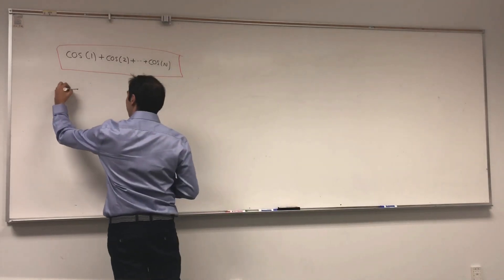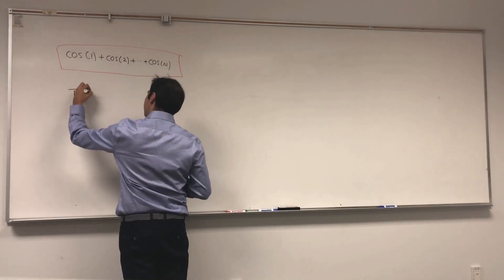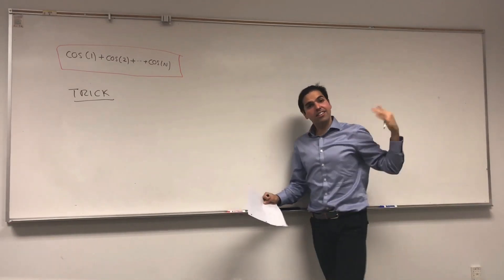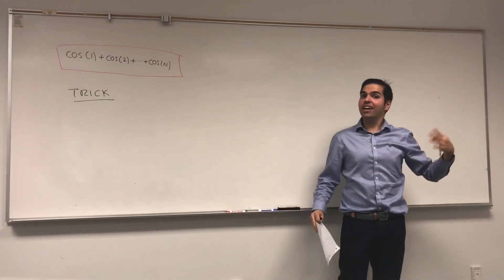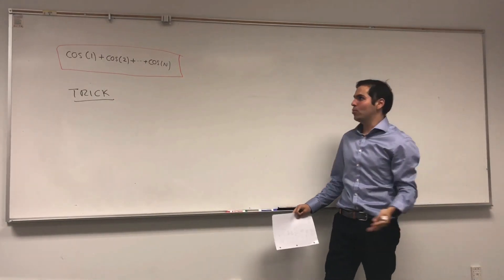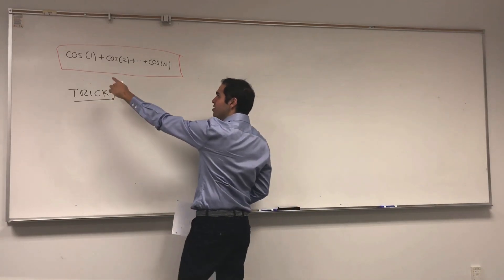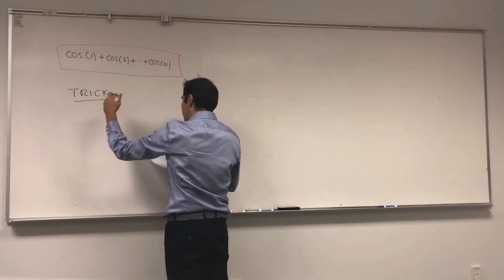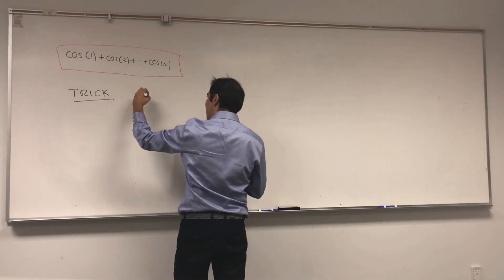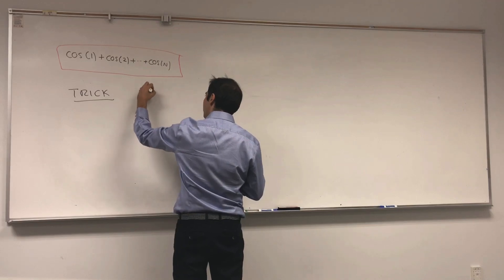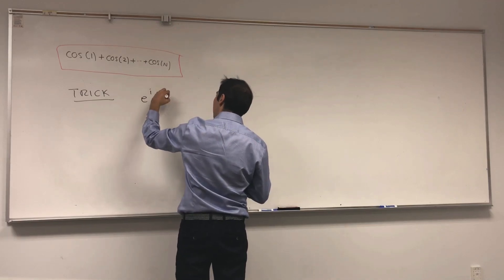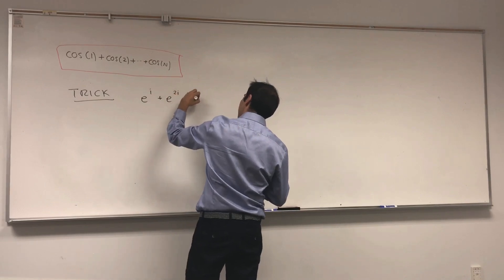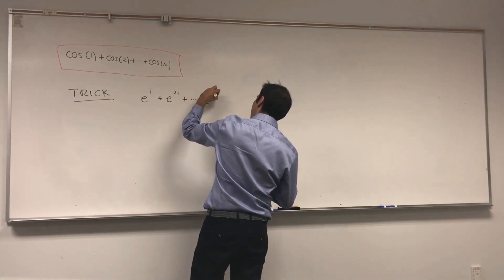And here's the trick. This is a real thing, but let's quickly do an excursion into the complex world. So instead of considering cosine of one, cosine of two, up to cosine of n, let's consider the complex version: e to the i, e to the two i, plus dot dot dot, plus e to the n i.